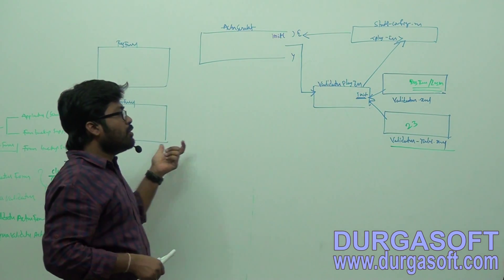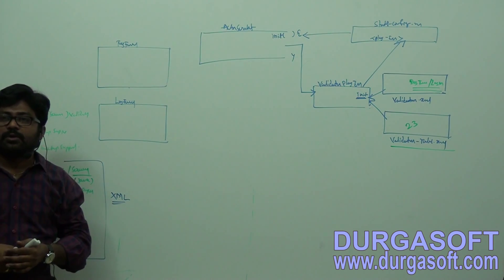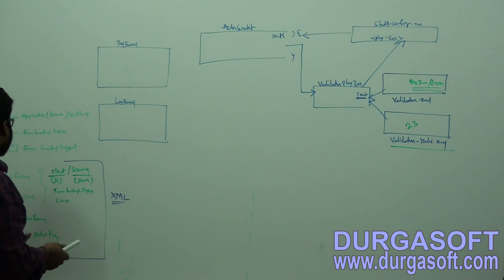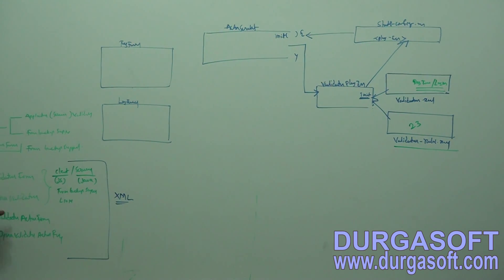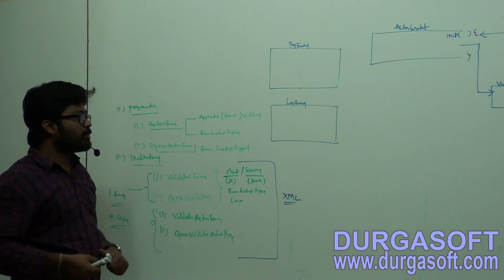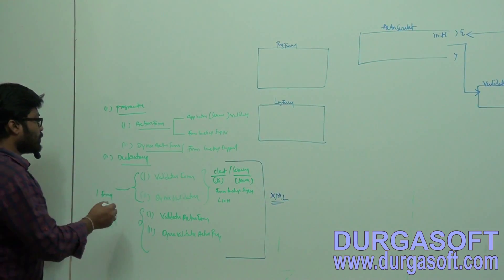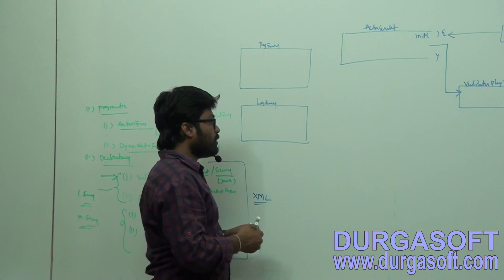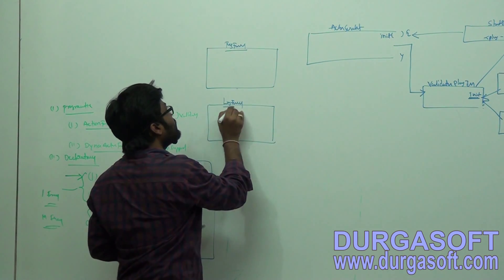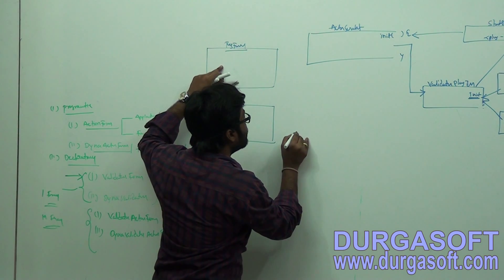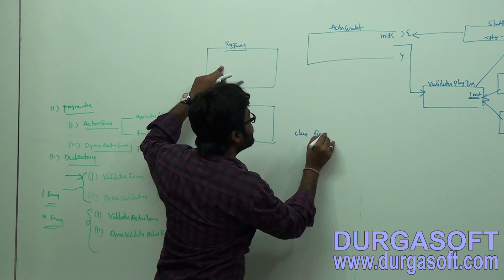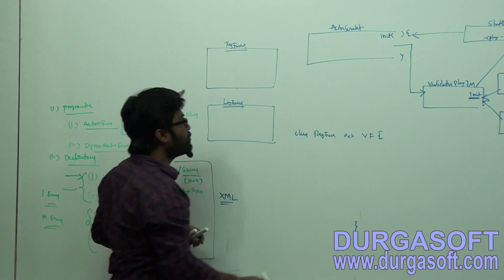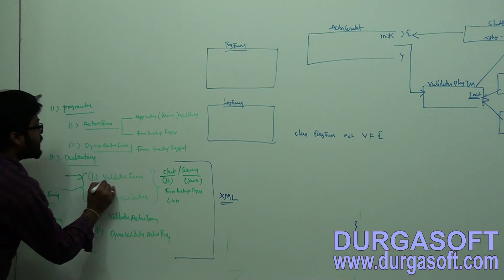Validations will be provided by your ValidatorPlugin class by writing validations under validation.xml. But for form backup support, a bean class is required. That bean class support is provided by ValidatorForm, DynaValidatorForm, ValidatorActionForm, or DynaValidatorActionForm. If you choose the first one — ValidatorForm — you need to extend your registration form bean from ValidatorForm.